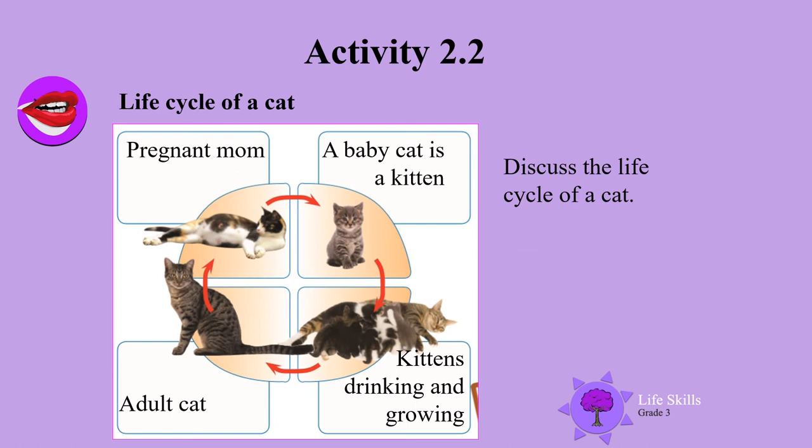Ask mum if you are correct. Have a look at this lovely diagram of the life cycle of a cat. A baby cat is a kitten, and then the arrow goes to the kittens drinking and growing. They get bigger and bigger until they are an adult cat, and then the cycle goes around again.